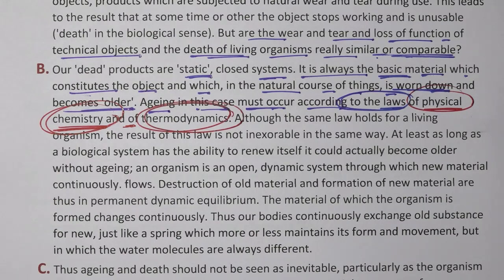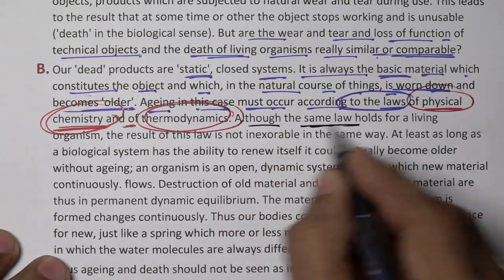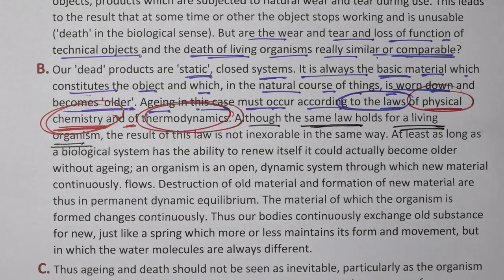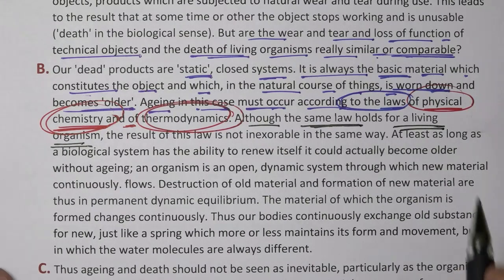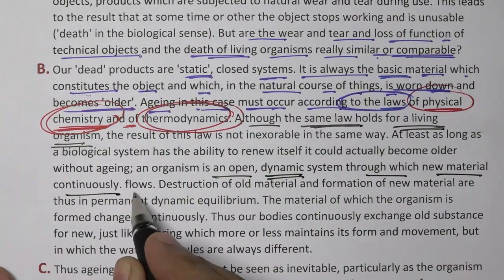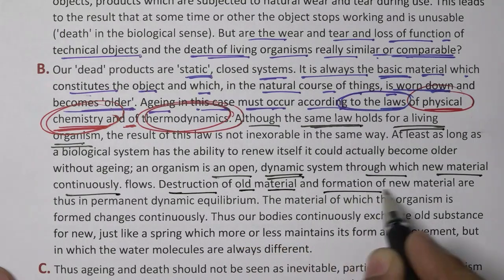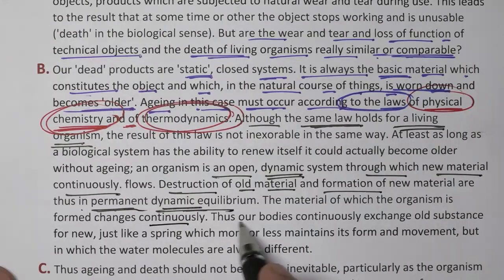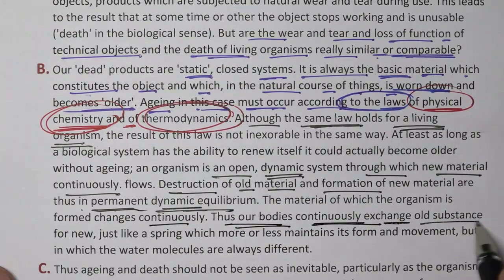Although the same laws hold for living organisms, the result is not equally harsh — at least as long as the biological system has the ability to renew itself. It could actually become older without aging. An organism is an open, dynamic system through which new material continuously flows. Destruction of old materials and formation of new material are in permanent dynamic equilibrium.